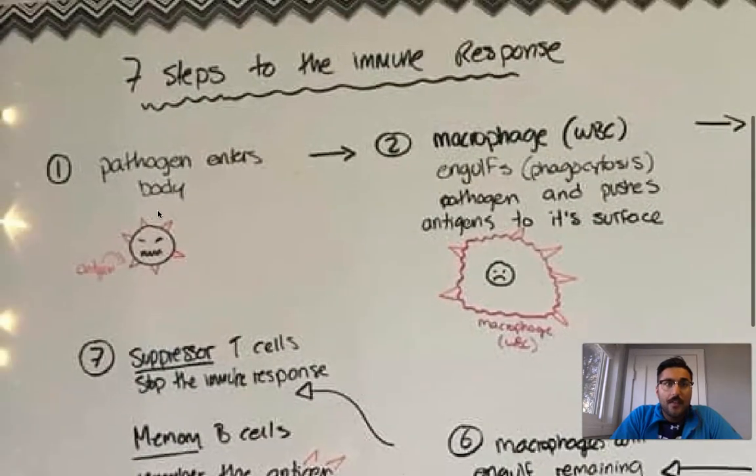So step number one, the pathogen enters the body. So there's the pathogen, looks all mean, and he's got these little red triangles around his surface, and those are antigens.